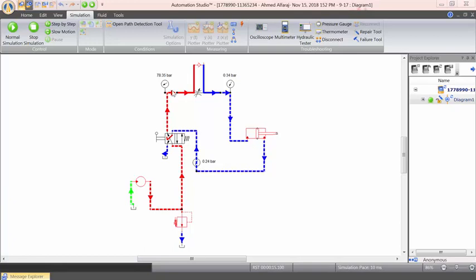You can see the meter-in circuits are typically the flow is controlled before the cylinders. You can see this cylinder, there is a flow control valve here, so flow is controlled here. On the meter-out circuit, the flow is controlled on the return lines.